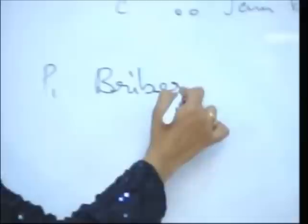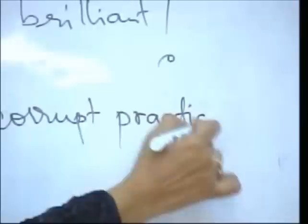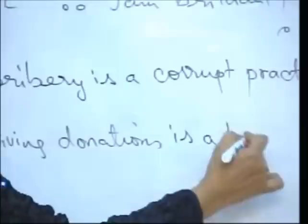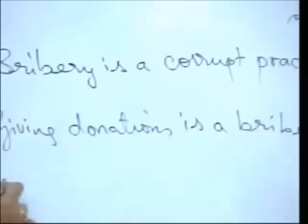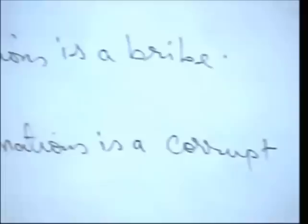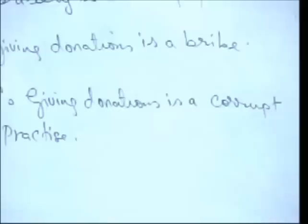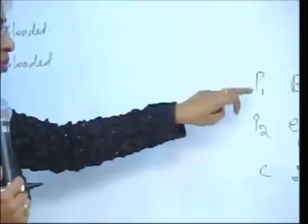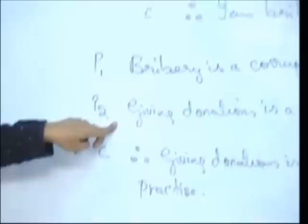Let's take another simple argument. Premise 1: bribery is a corrupt practice. Premise 2: giving donations is a bribe. Conclusion: therefore giving donations is a corrupt practice. Let us critically assess this conclusion. The generalization is a common statement — all forms of bribery, whether you give or take, is corrupt. There is no doubt about premise one. Now we come to a specific type: giving donations. You are saying giving donations is a bribe.